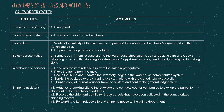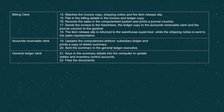This is the table of entities and activities for the sales order system. This table shows all the activities and entities involved, starting when the franchisee places an order, preparation of 5 copies of the sales order form by the sales representative, packing items and shipping, billing the franchisee, updating the computerized subsidiary ledger, sending a summary to the general ledger executives, keying in summary details in the computer, and finally filing the documents.